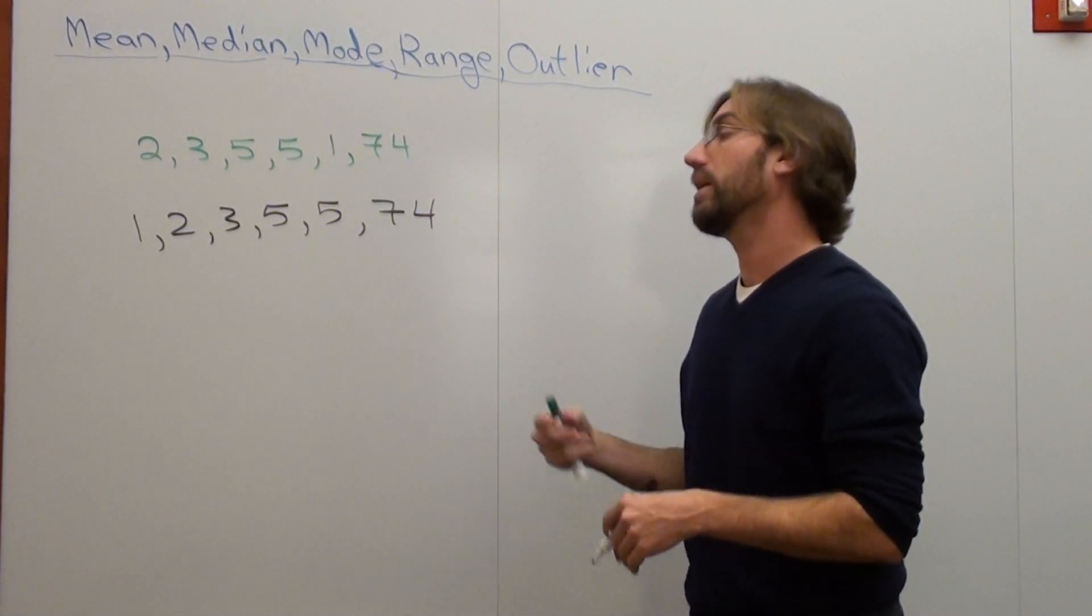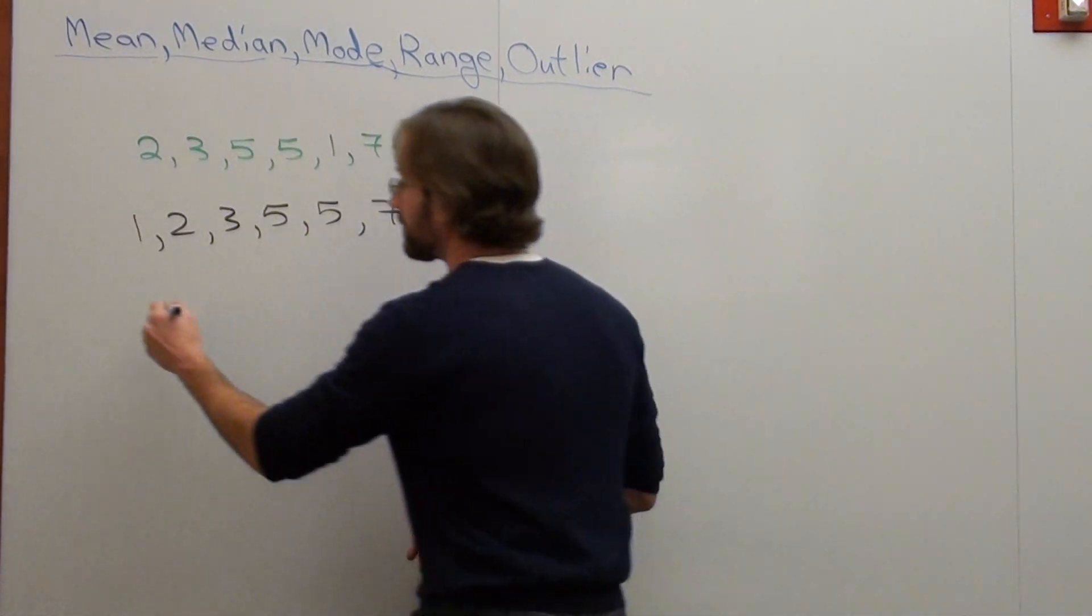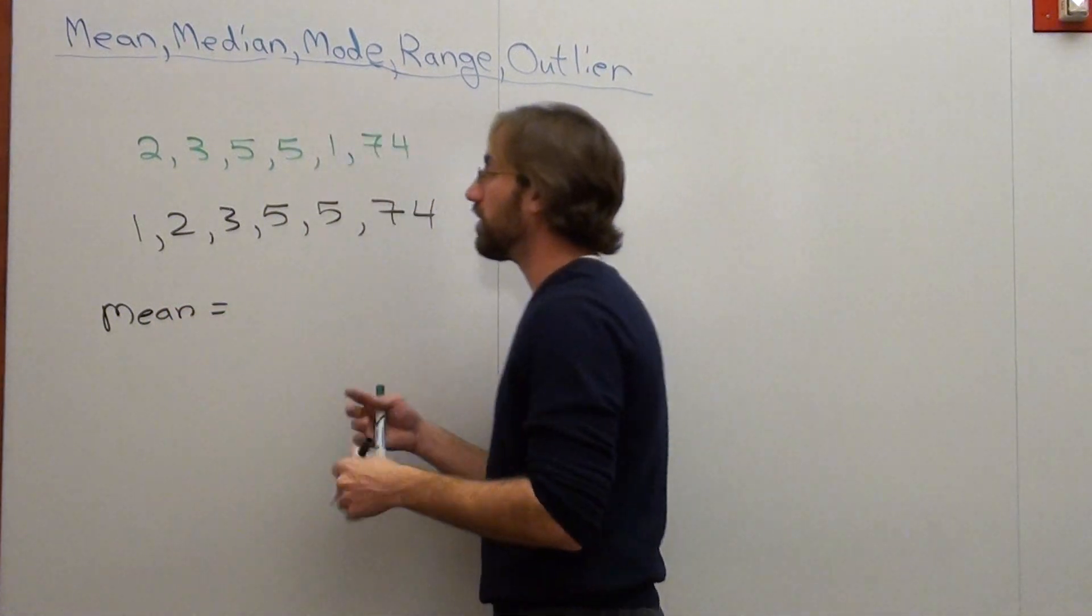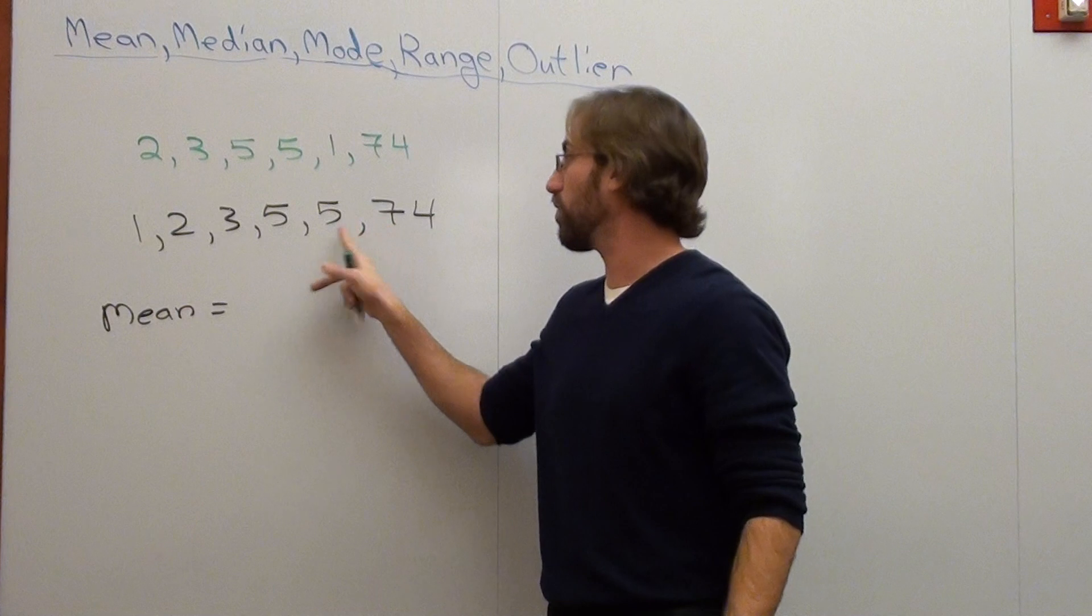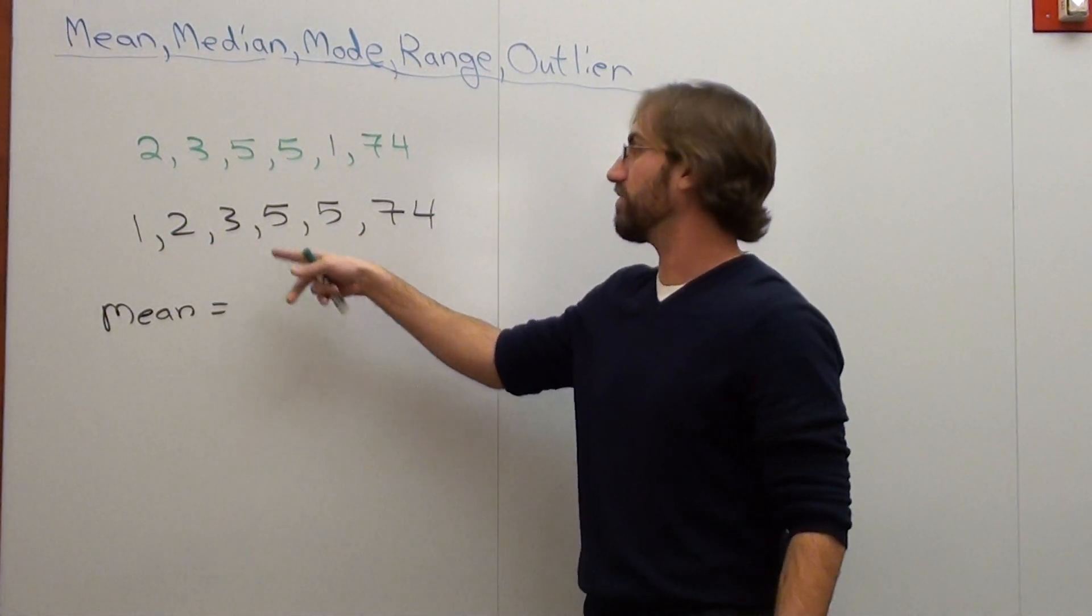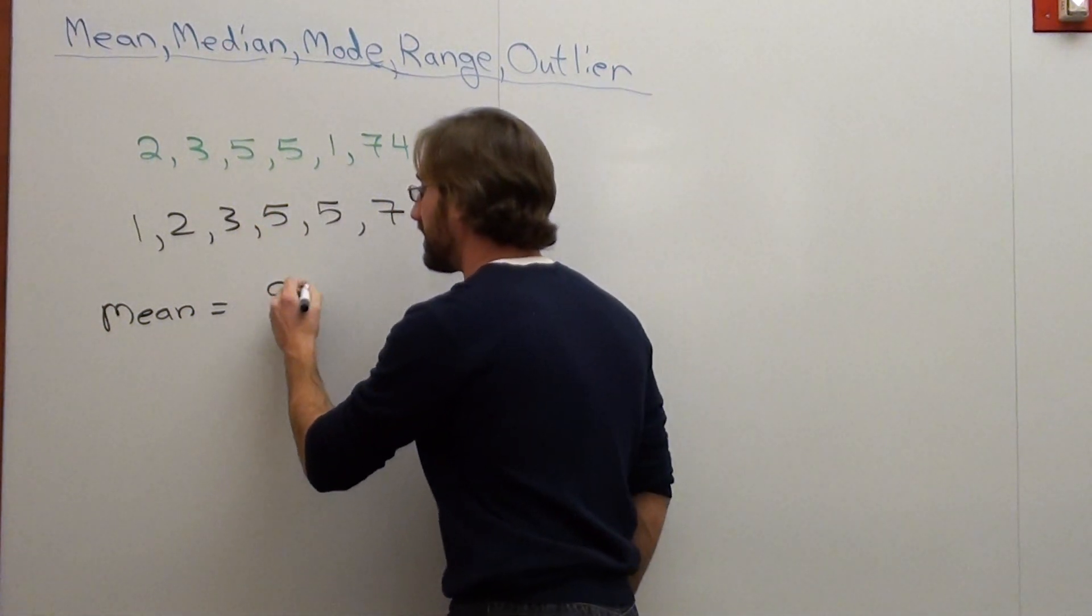And we're going to start with mean. And mean is actually the most difficult one. But once you get past it, it's pretty easy. So in order to figure out the mean, all you've got to do is just add up all the numbers and divide by how many there are. So it's 74 plus 5 plus 5 plus 3 plus 2 plus 1, which is 84, 87, yeah, that works out nicely, which is 90.